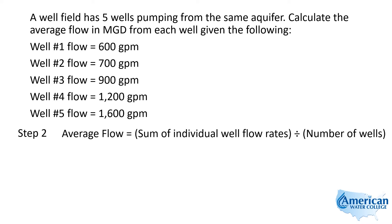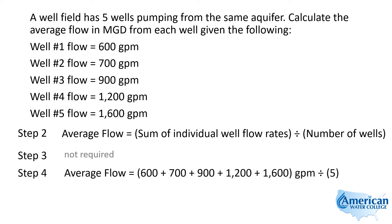The formula is basically: take the sum of the individual well flow rates, meaning we take 600, add it to 700, add it to 900, add 1,200, add 1,600, get that total, and then divide it by the number of wells — in this case, five. So 600 plus 700 plus 900 plus 1,200 plus 1,600 gallons per minute divided by five wells gives us an average flow of 1,000 gallons per minute.